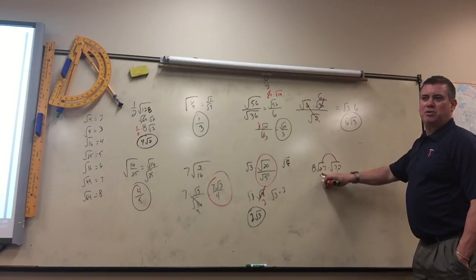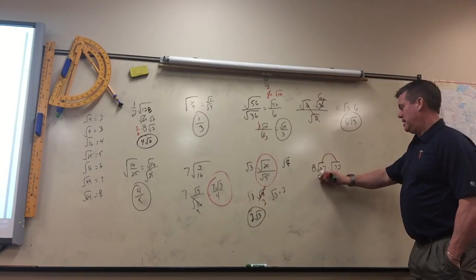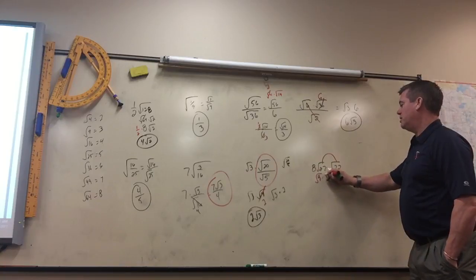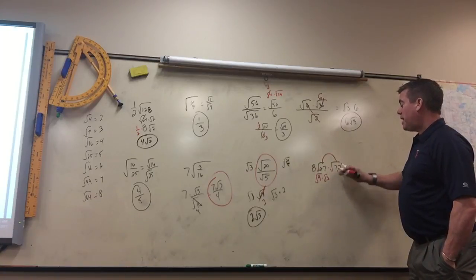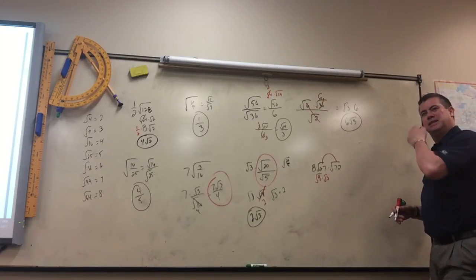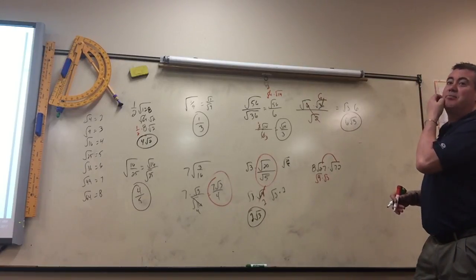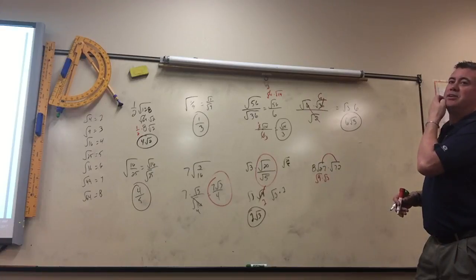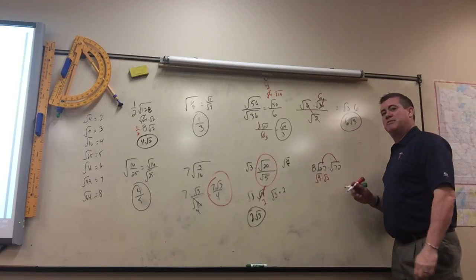What perfect square goes into 27? 9 times 3. What perfect square goes into 72? 9 times 8, but 8, we'll simplify again. There's a bigger perfect square that goes into 72.